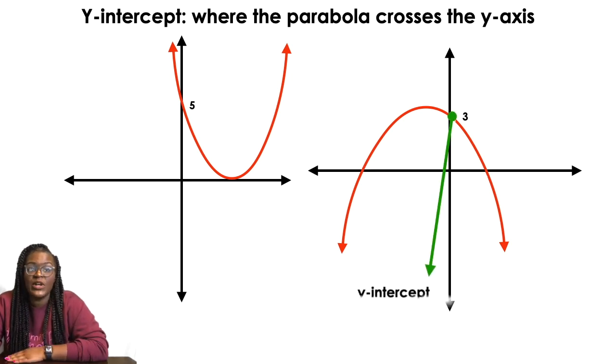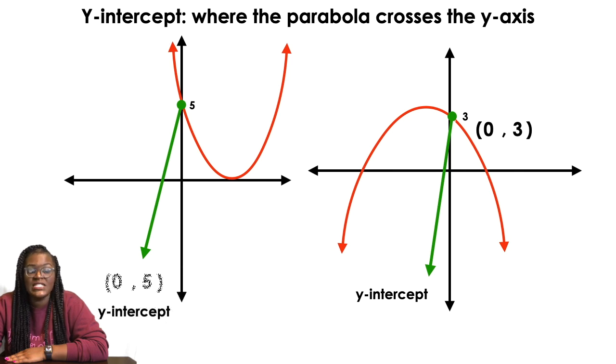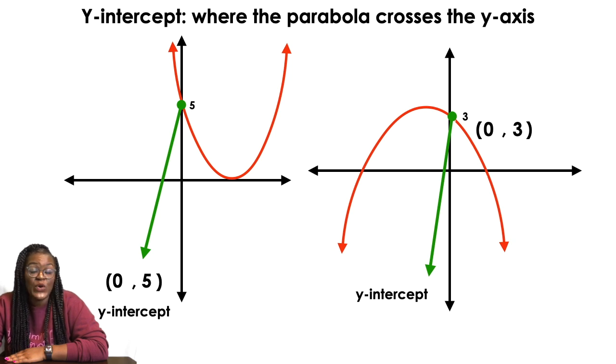So now, last but not least, is the y-intercepts, where the graph touches the y-axis. So we have one that's at 3, so obviously I'm gonna say that's 0 comma 3. And then I have one that's at 5. This is my other y-intercept for the other one, and that's gonna be at 0 comma 5.